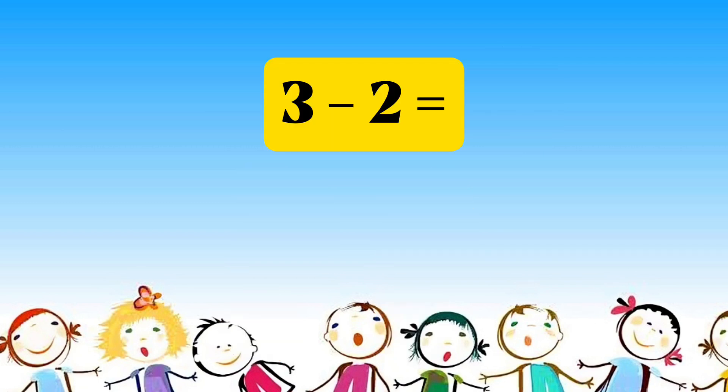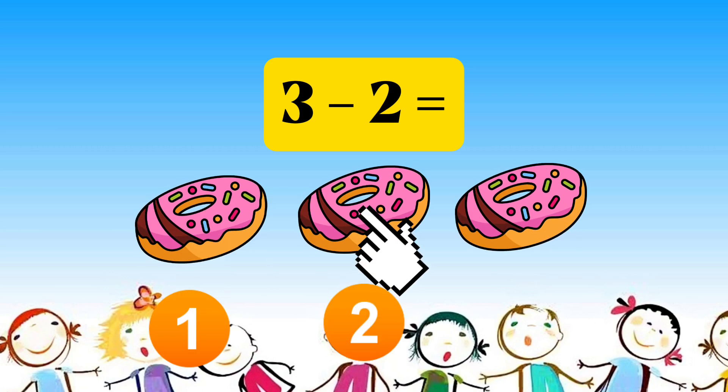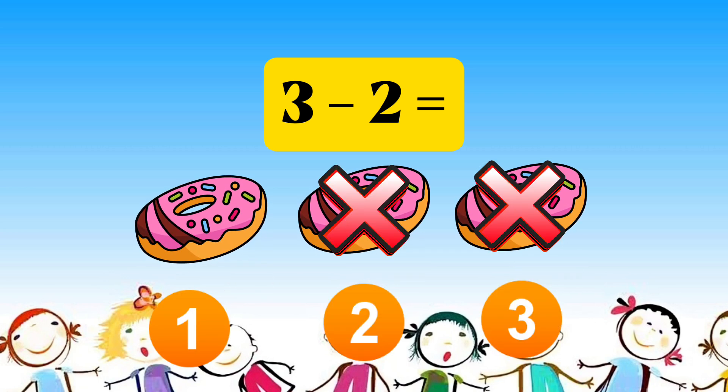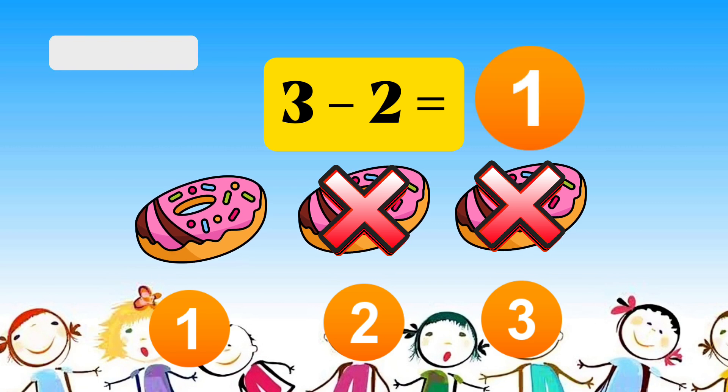Three minus two equals one, two, three. Less two equals one.